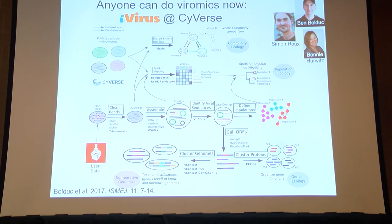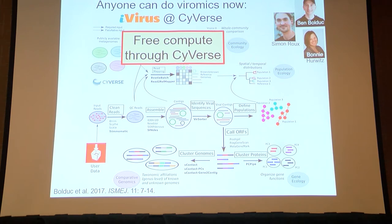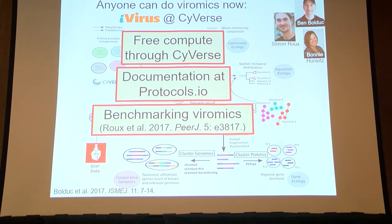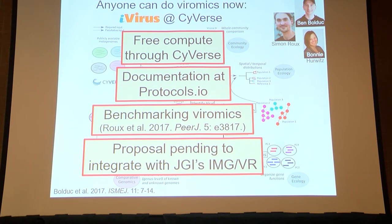Anyone can do this now. We've developed community-available tools at an NSF-funded cyberinfrastructure called Cyverse, where the compute is both large and free. Extensive documentation exists at protocols.io, where communities can give live feedback on benchmarking. Simon Ruh has pioneered consistent standard efforts including a benchmarking paper in PeerJ. We recently wrote a proposal to integrate this iVirus effort with IMGVR, hoping to connect into the powerful new resources that JGI is putting together.